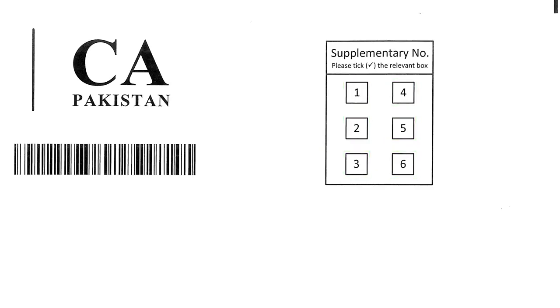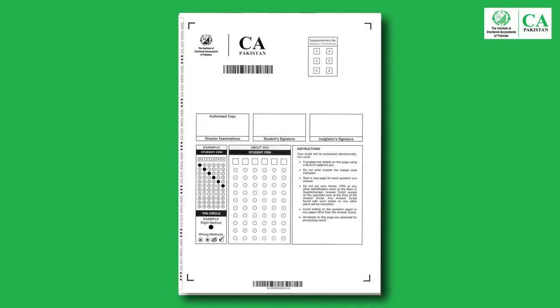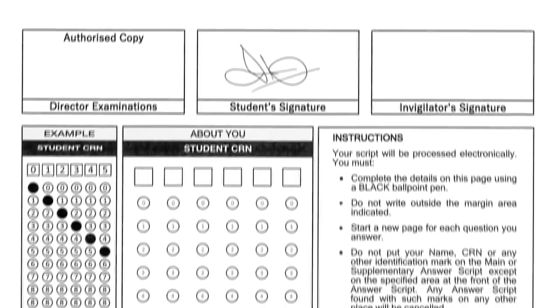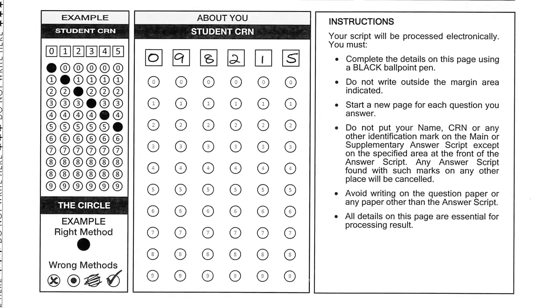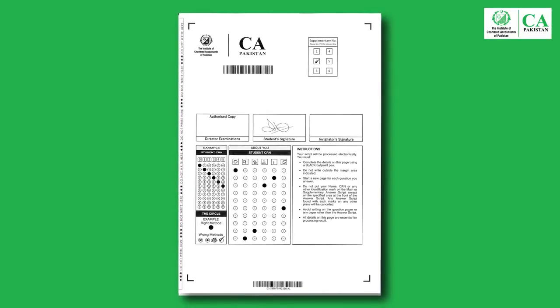For example, in the case of the first supplementary script, place a tick mark at one; for the second supplementary script, tick mark at two, and so on. It must be noted that there is no space on the supplementary answer script to write your name and subject.